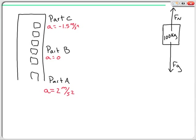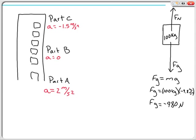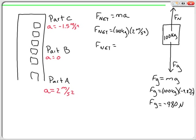First things first, I'm going to need to know the weight of the person — the FG. FG is always equal to MG, and in this case FG is equal to 100 kilograms times negative 9.8 meters per second squared, giving an FG of negative 980 newtons. Now for Part A, where I have an acceleration of 2 meters per second squared, you should start with Newton's second law: F net equals mass times acceleration. F net is equal to 100 kilograms multiplied by 2 meters per second squared.